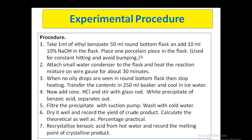Let's see the experimental process. First, take 1 ml of ethyl benzoate in a 50 ml round bottom flask, then add 10 ml of 10 percent NaOH. Place one porcelain piece in the flask for constant heating — it also avoids bumping. Then attach a small water condenser to the flask and heat the reaction mixture on a wire gauze for about 30 minutes.